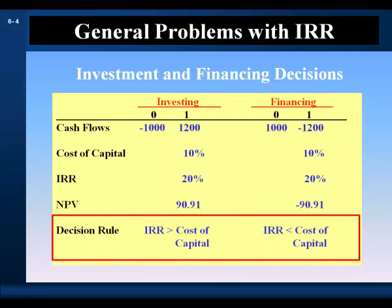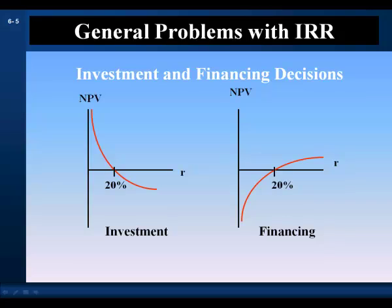The borrowing's NPV is negative, and it is also rejected by the net present value rule — so the two decision rules are once again in agreement. The key point is that the IRR decision rule criteria must conform to whether the decision is an investment decision or a financing decision. As long as the NPV profile is strictly decreasing or increasing in the discount rate, the IRR rule and the NPV rule will be in agreement for independent projects.